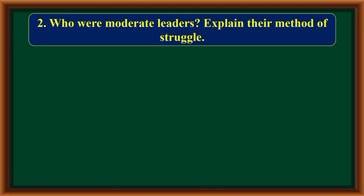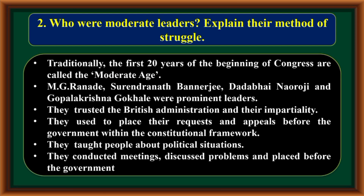Who were moderate leaders? Explain their method of struggle. Traditionally, the first 20 years of the beginning of Congress are called the moderate age. Yamji Ranadi, Surendranath Banerji, Dadabhai Nooroji, and Gopal Krishna Gokhale were prominent leaders. They trusted the British administration and their impartiality. They placed their requests and appeals before the government within the constitutional framework, taught people about the political situation, conducted meetings, discussed problems, and placed them before the government.